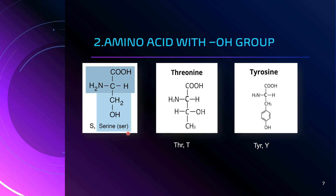In case of threonine, one more hydrogen is replaced with another methyl group. The alpha carbon has the carboxylic group, amino group, and hydrogen, and the whole remaining portion is the R group. The three-letter code is THR and it is represented in single-letter code by capital letter T.